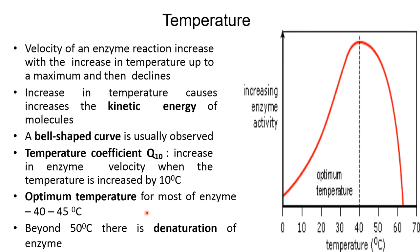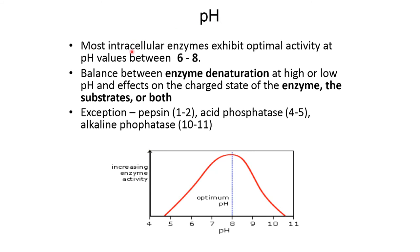Beyond 50 degrees centigrade, there is denaturation of the enzyme. Regarding pH, most intracellular enzymes exhibit optimal activity at pH values between 6 to 8. There is a balance between enzyme denaturation at high or low pH and the effect on the charged state of the enzyme, the substrate, or both. Exceptions include pepsin, with a pH range of 1 to 2; acid phosphatase, with a pH range of 4 to 5; and alkaline phosphatase, with an optimum pH range of 10 to 11.